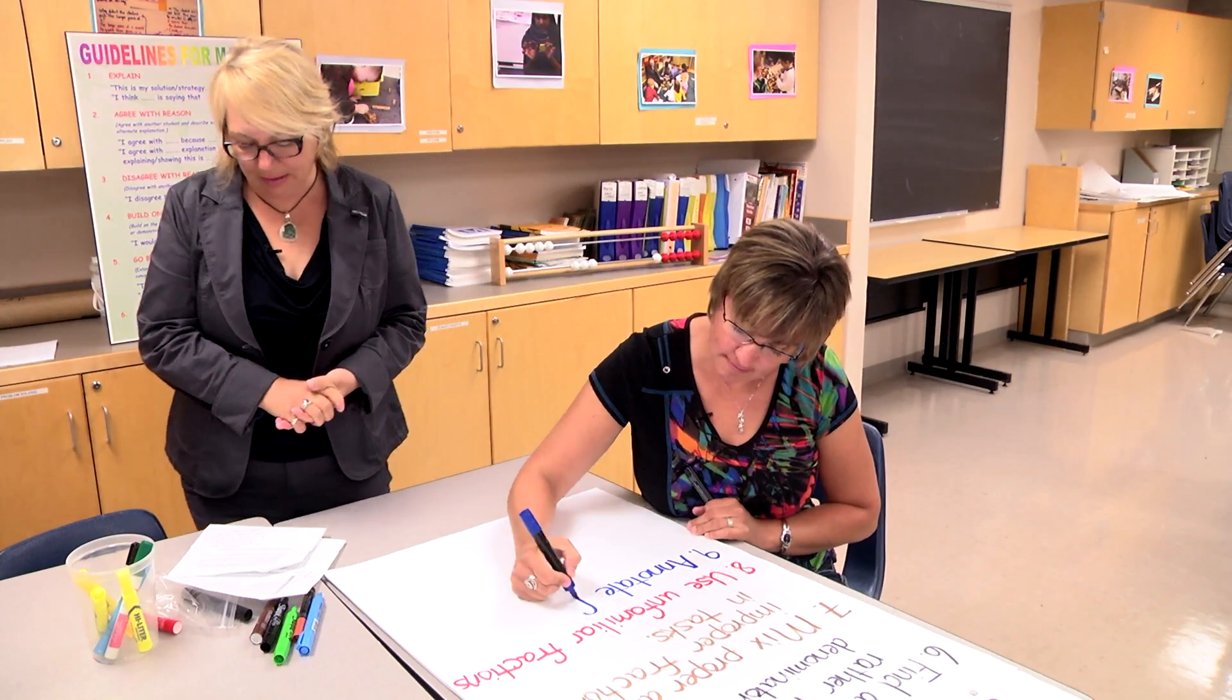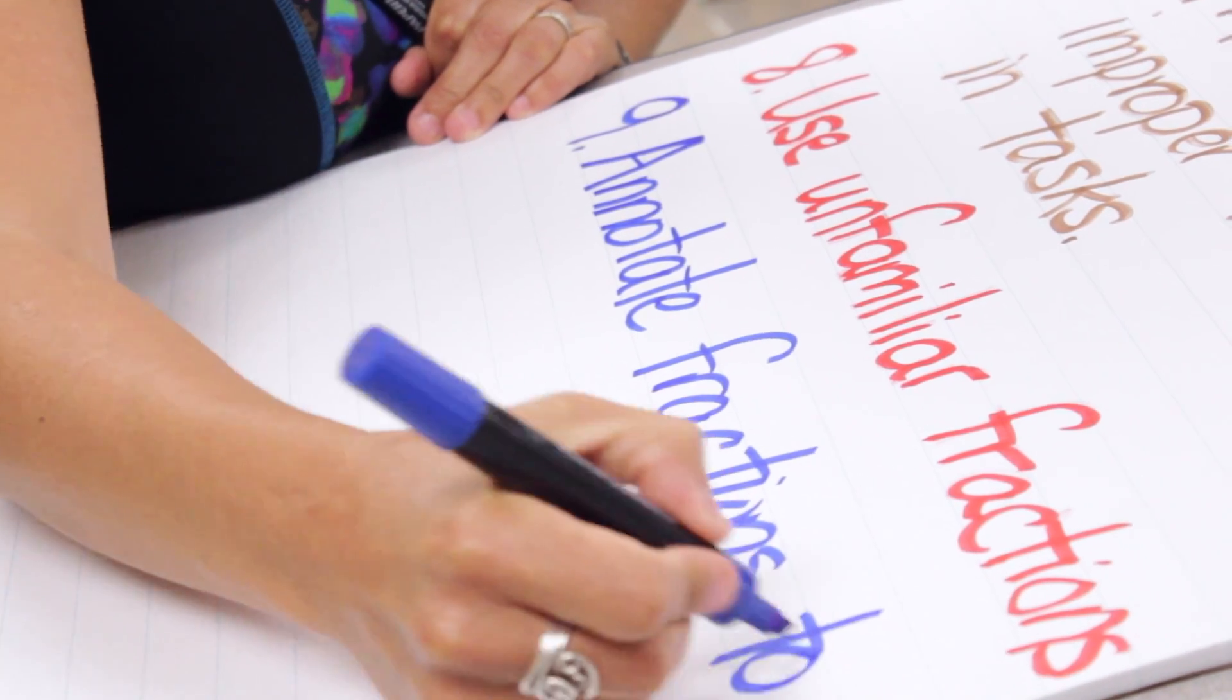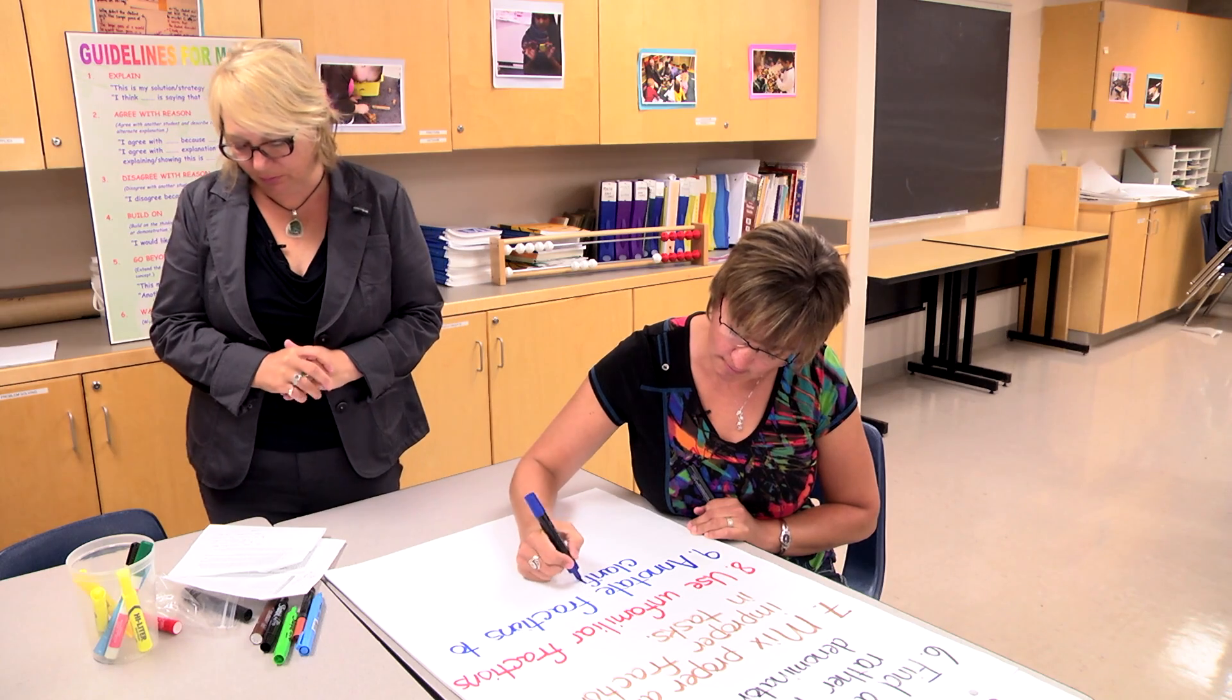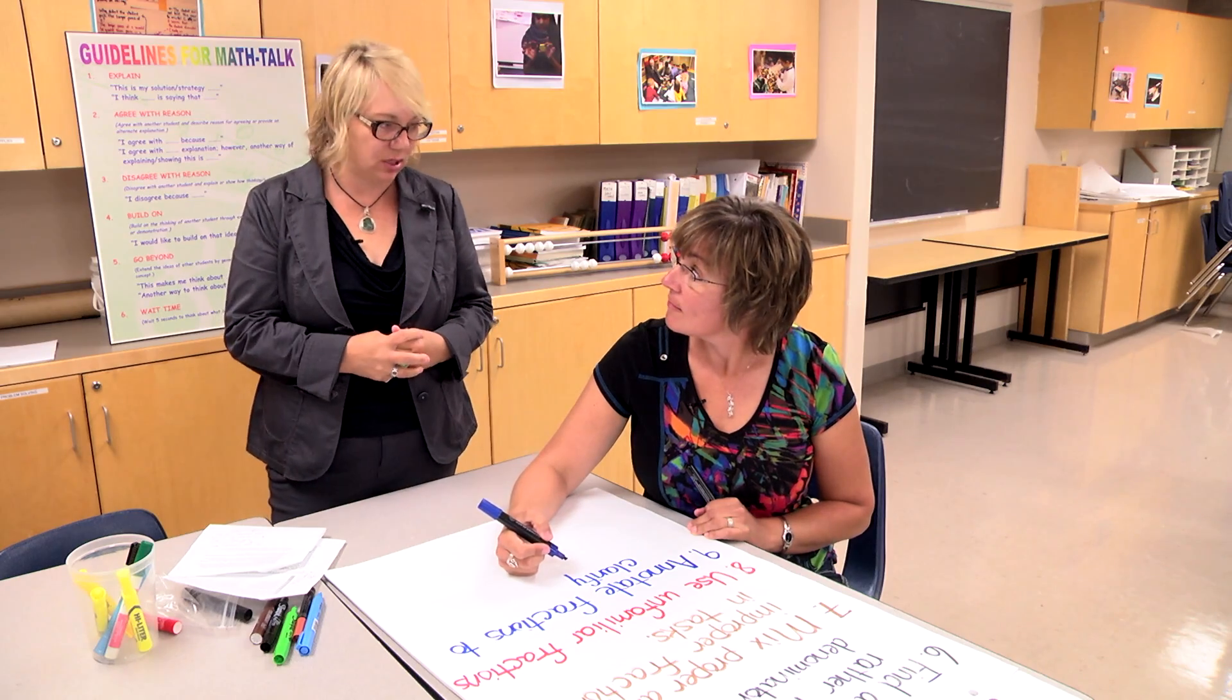Lesson 9 is annotate fractions to help clarify the meaning of the digits. If you're describing unshaded areas of a rectangle, label the numerator as the total number of unshaded regions and the denominator as a total number of equal regions in the whole.